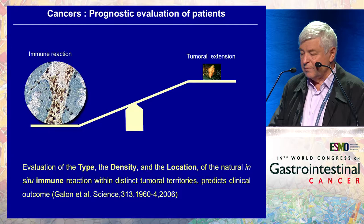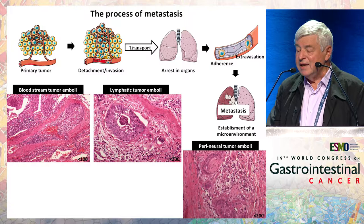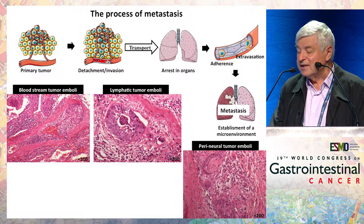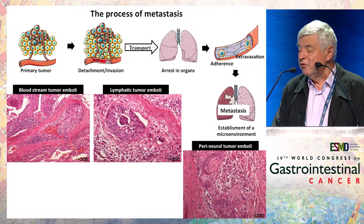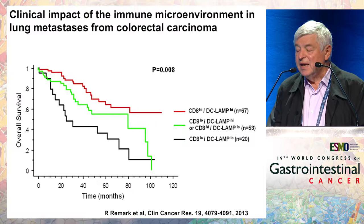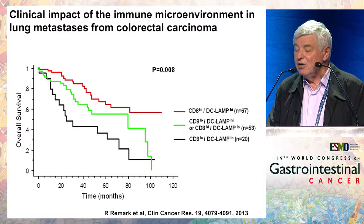This, in some respect, forms the basis for having immunotherapy approaches in cancer. As we all know, cancers also escape the primary tumor and migrate via lymphatic vessels, blood vessels, nerves, and form metastasis. Is the game played again at the metastatic site? To make a long story short, the answer is yes.